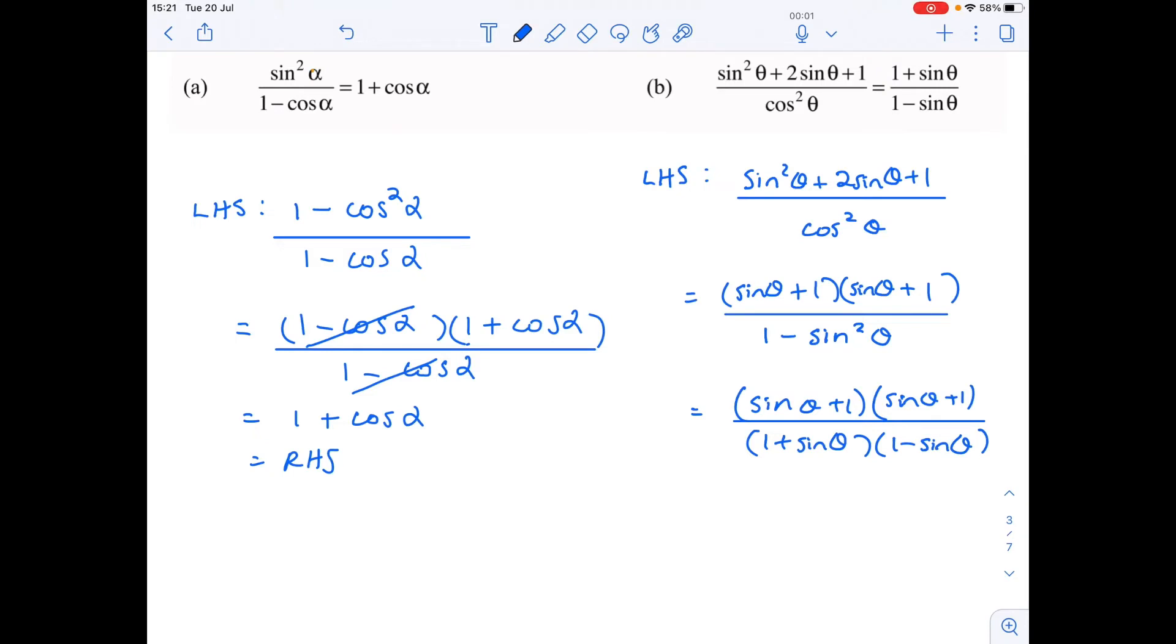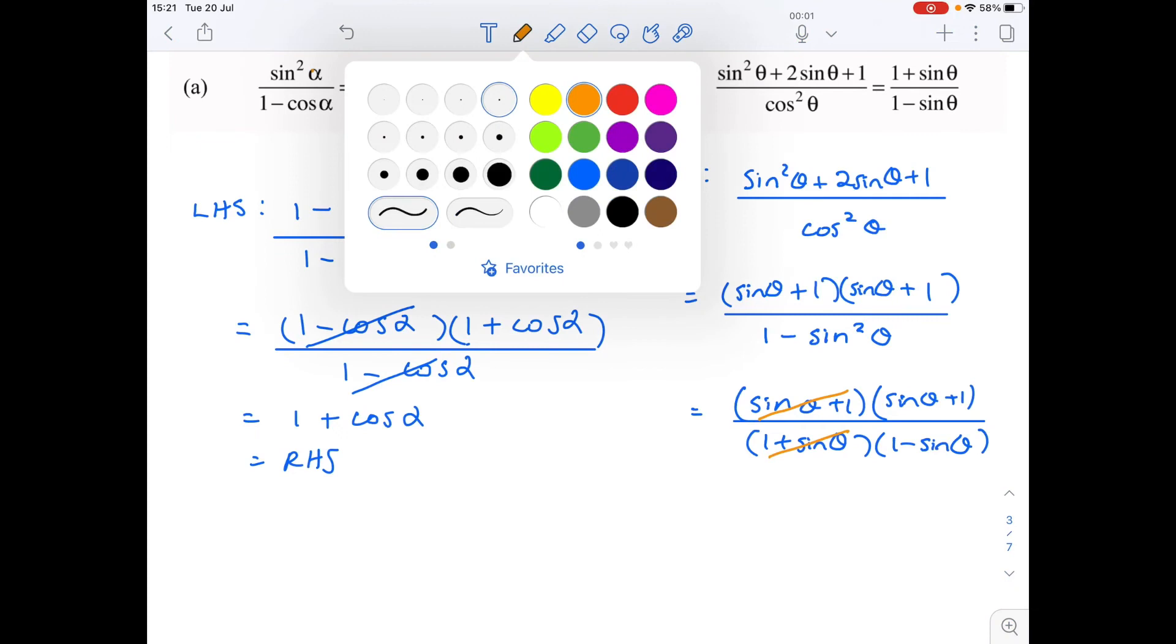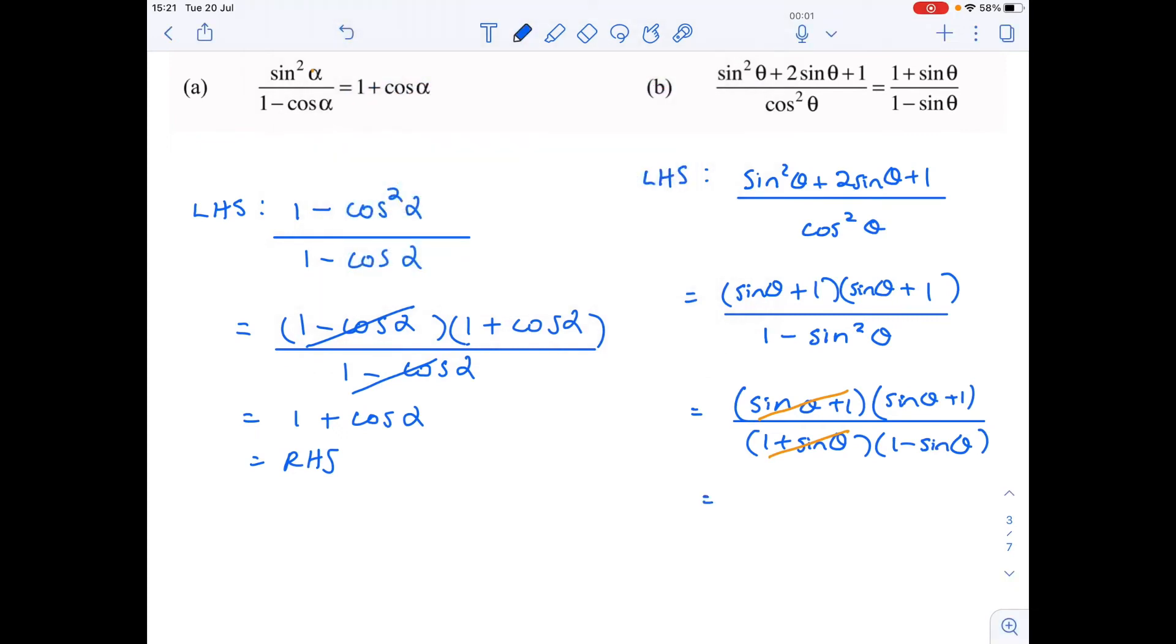If you look at the denominator, that is the difference of two squares, so it'll be 1 plus sin theta, 1 minus sin theta. Now we look and think, can I cancel anything? I've got a plus and a plus. That sin theta plus 1 is the same as 1 plus sin theta. I'm left with sin theta plus 1 over 1 minus sin theta. If I look at my right hand side, that is exactly what I'm looking for. There we've done it.